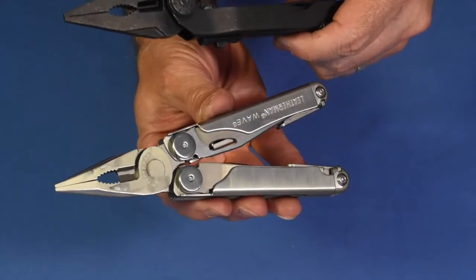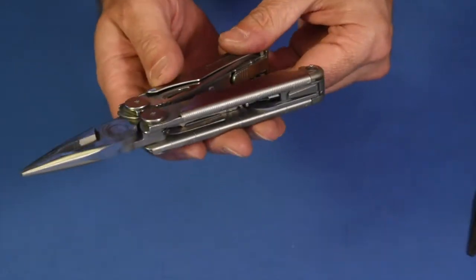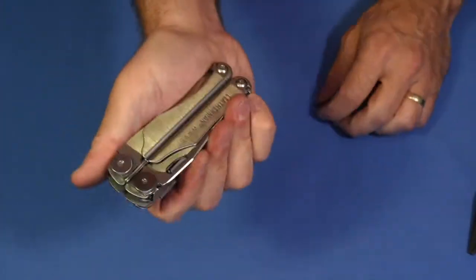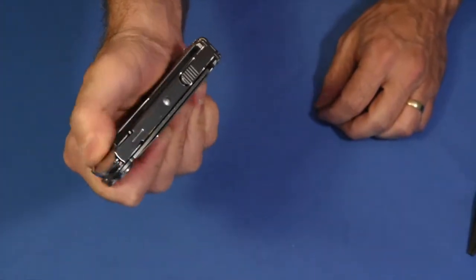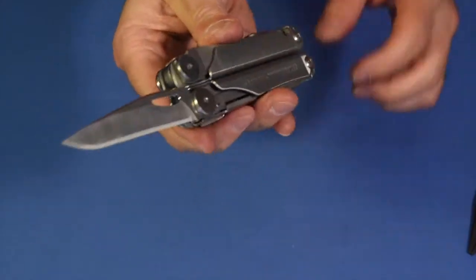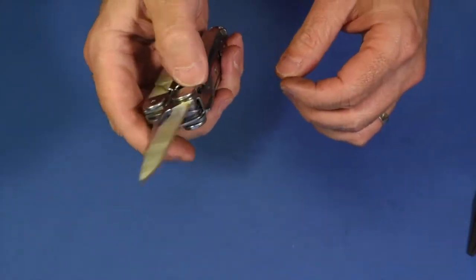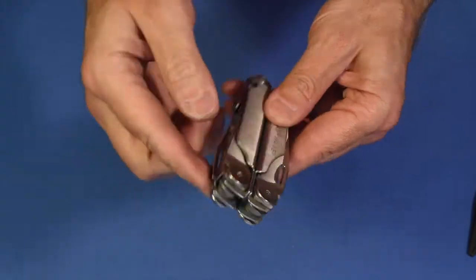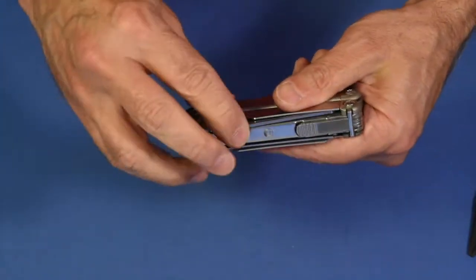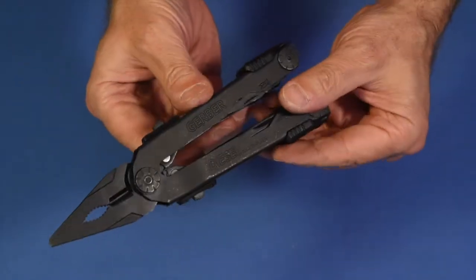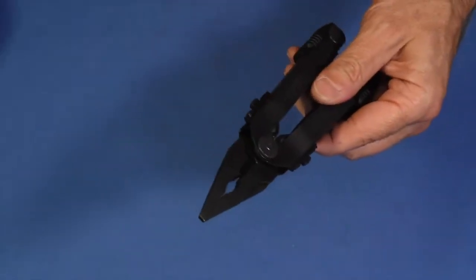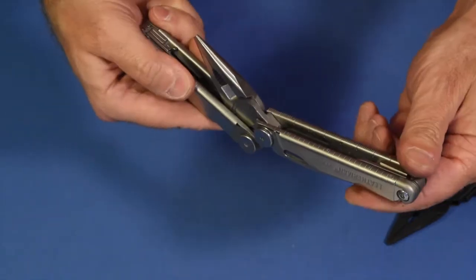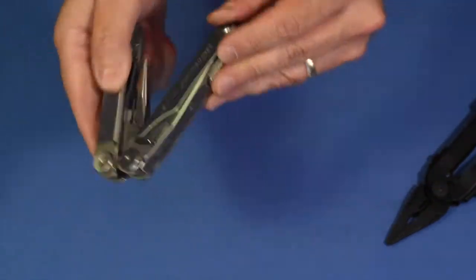If I may say, with the Leatherman, at least when the thing is closed, like this, I have a one-hand deploy of a blade if I need it. And then a saw on the other side. And the various other tools. The other cutting tools are all on the outside. Where this one, all of the cutting tools are on the inside. Likewise with the Leatherman Wave, you know, all the screwdrivers and all that stuff are on the inside.